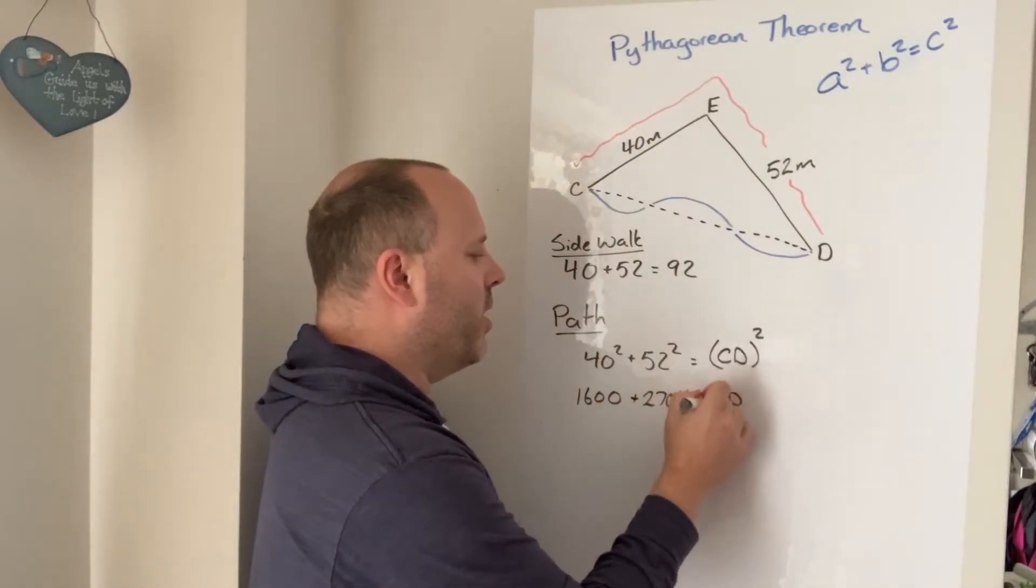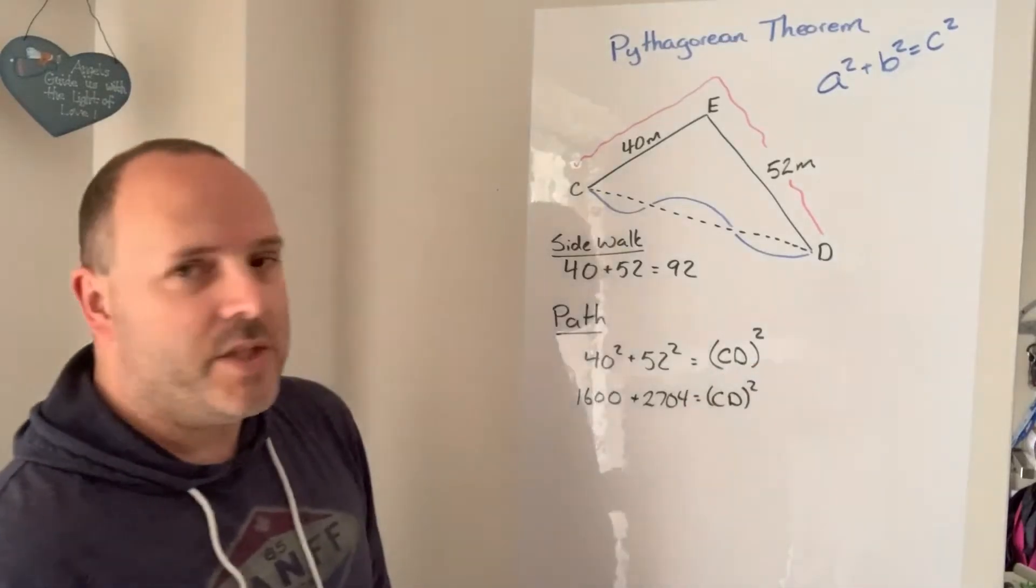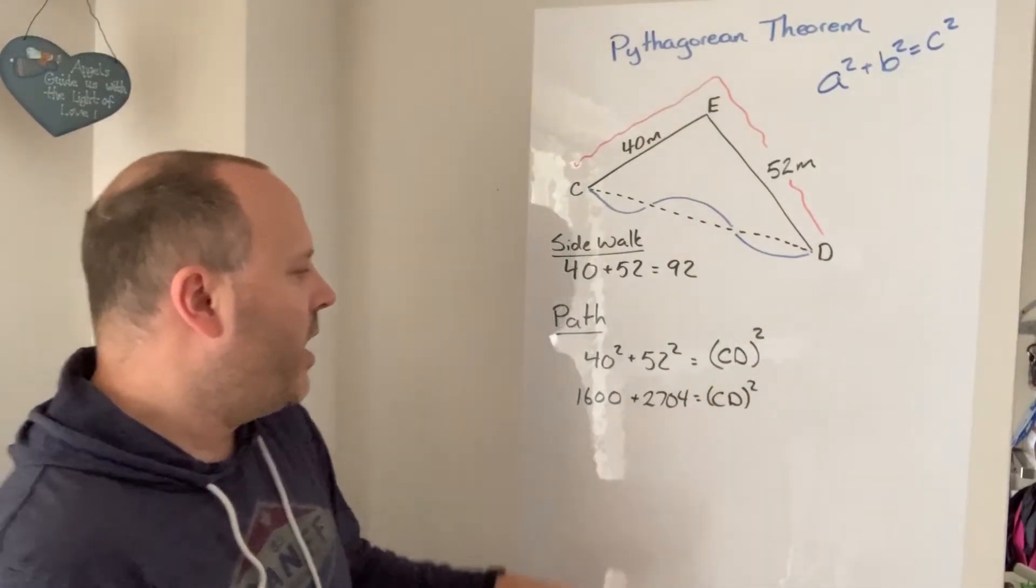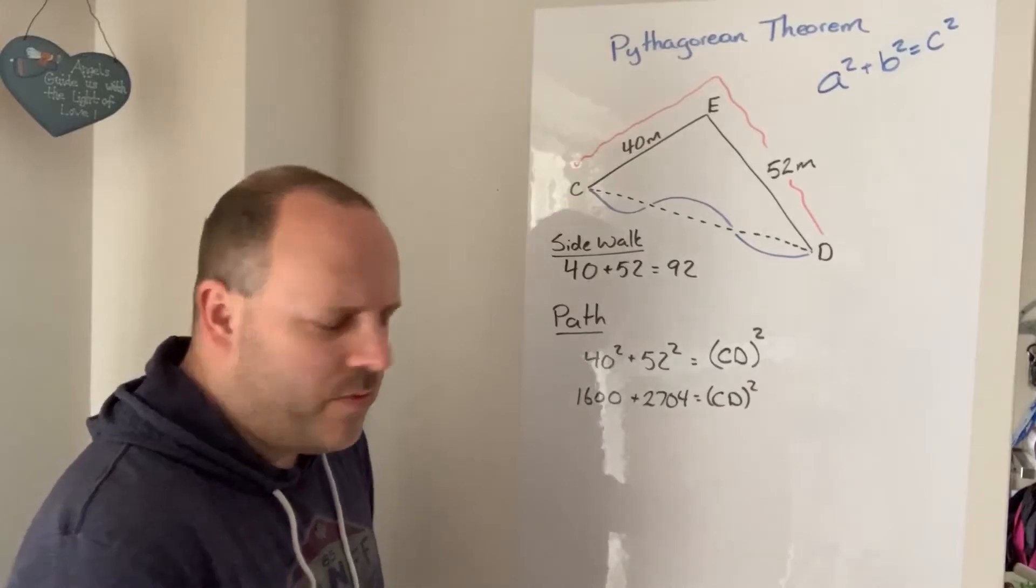And if I add those two together I'll get the square of the distance from C to D. So add those up, I get 4304.